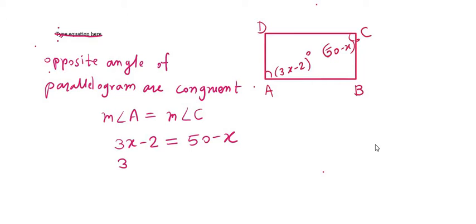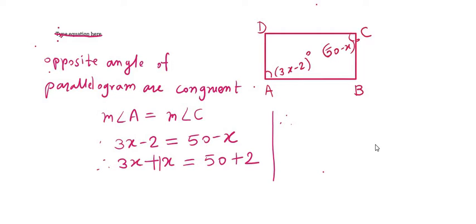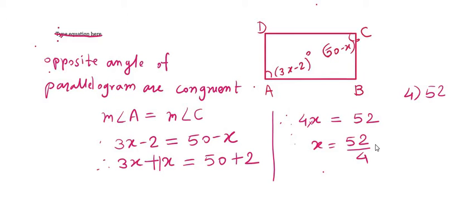Now solving: 3X minus 2 equals 50 minus X. Bring X to the left side: 3X plus X equals 50 plus 2, giving 4X equals 52. Therefore X equals 52 divided by 4, which is 13. So X equals 13.